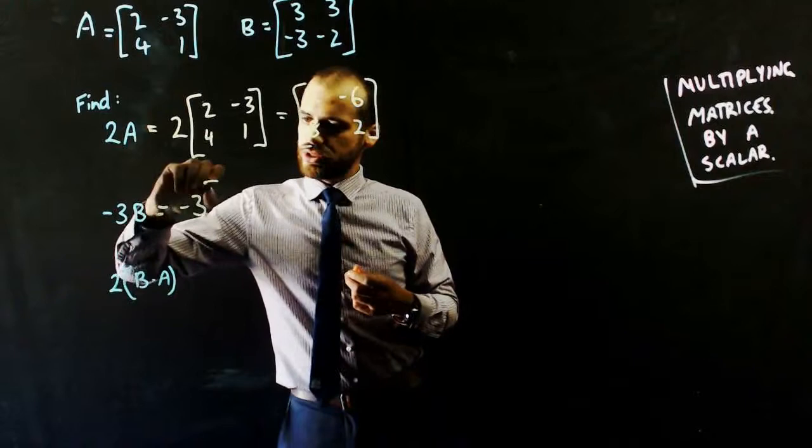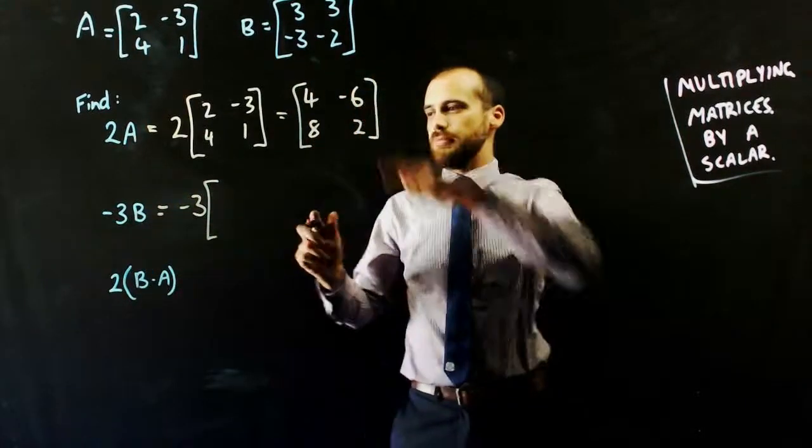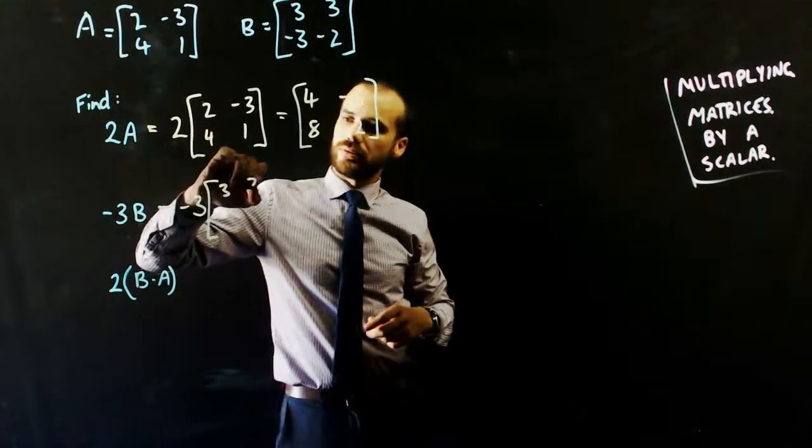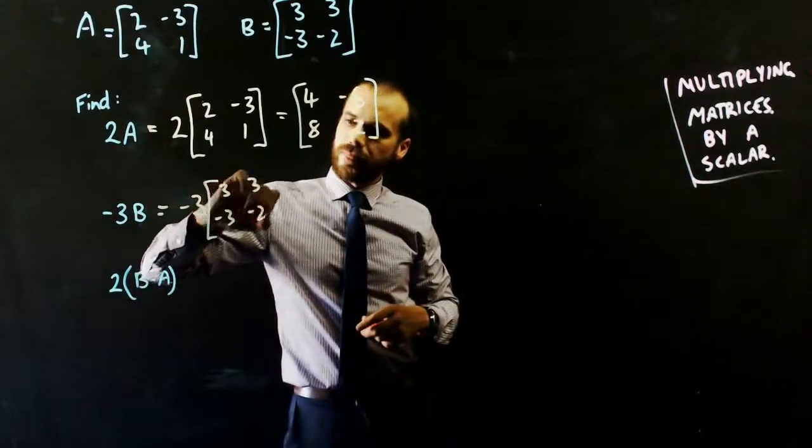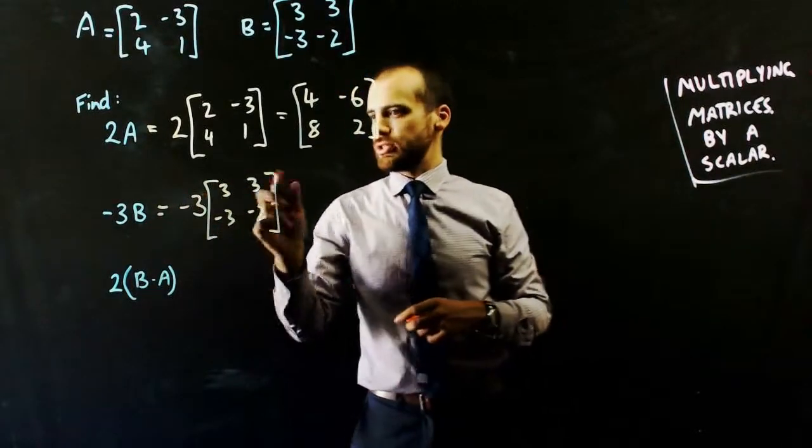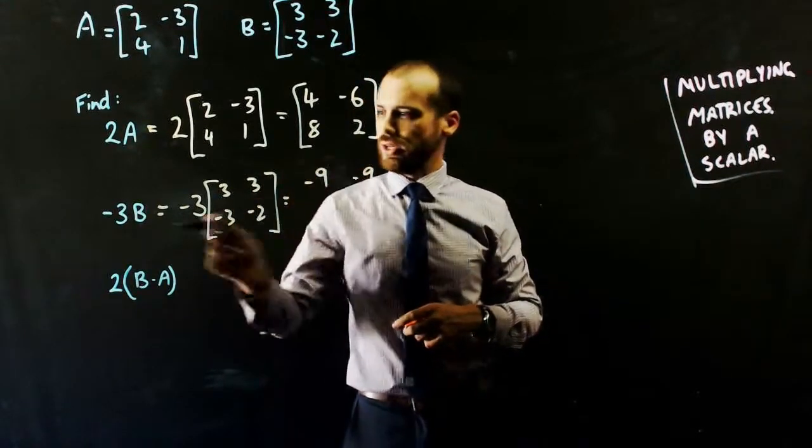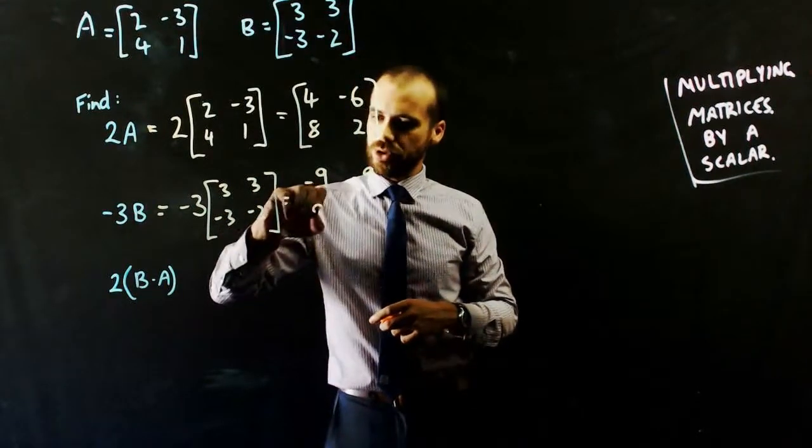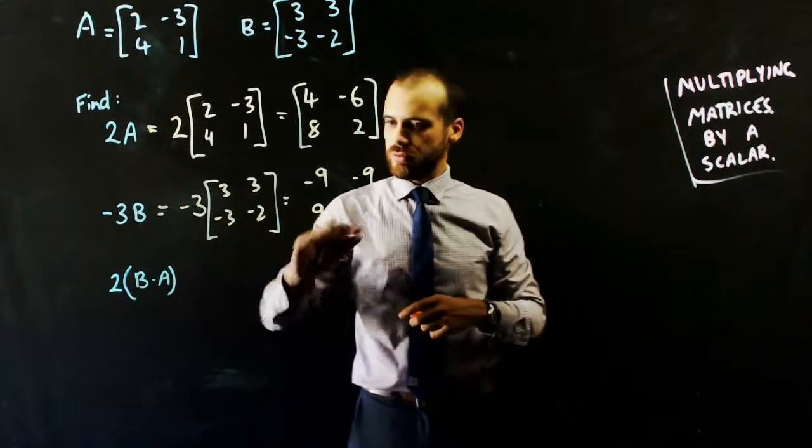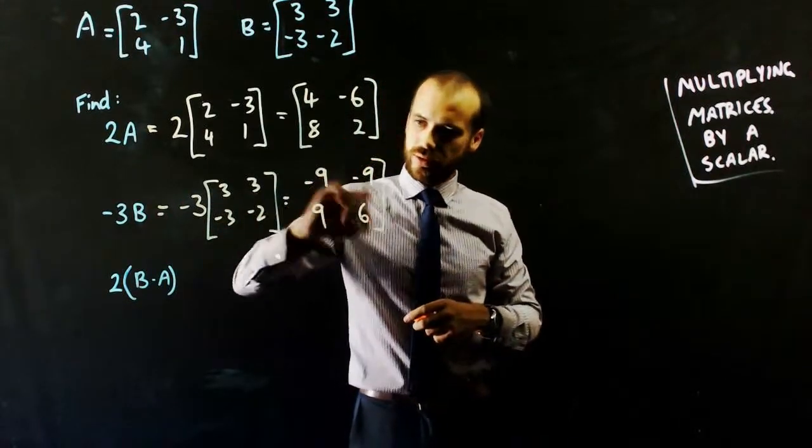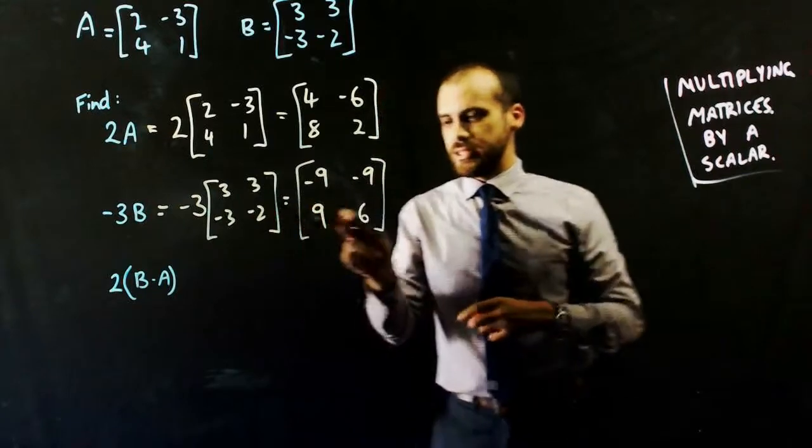Negative 3B is just negative 3 times that B matrix. Negative 3 times 3 is negative 9. Negative 3 times 3 is negative 9. Negative 3 times negative 3 is positive 9. And negative 3 times negative 2 is positive 6. And that is negative 3B.